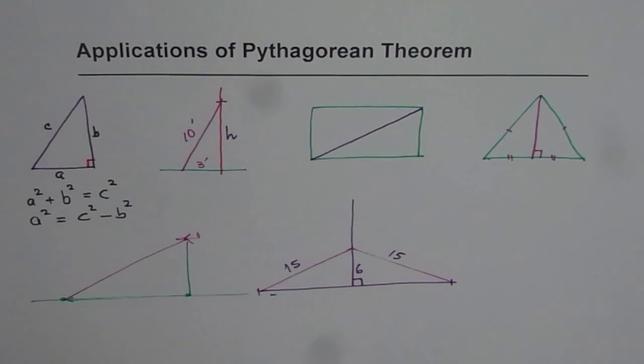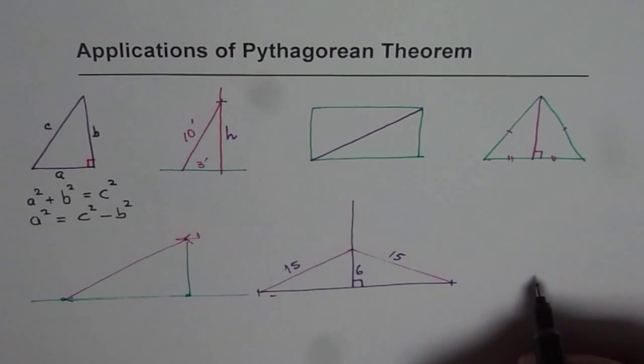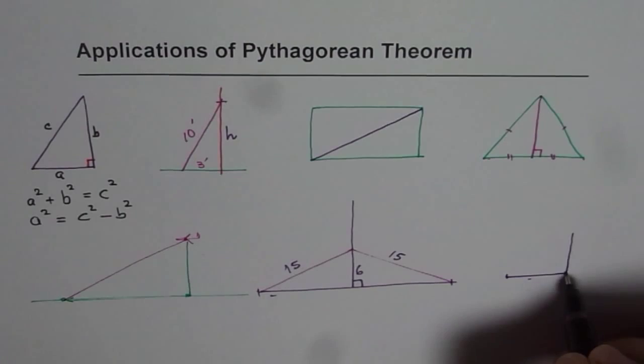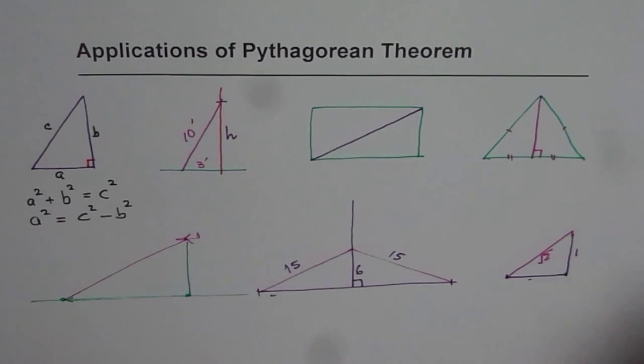You can also represent irrational numbers with the help of Pythagorean theorem, and that is interesting. Irrational number is a number like square root 2. Now square root 2 does not have an exact value, but with the help of Pythagorean theorem you can actually find the exact segment length of square root 2. If you take one side of the right triangle as one unit, the other side also as one unit, in that case diagonal will be square root 2. Well that is so simple.